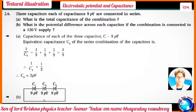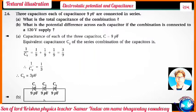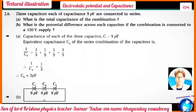Three capacitors each of capacitance 9 picofarads are connected in series. What is the total capacitance of the combination? And what is the potential difference across each capacitor if the combination is connected to a 120 volt supply? Part A: Equivalent capacitance in series: 1/Cs = 1/9 + 1/9 + 1/9 = 3/9 = 1/3, therefore Cs = 3 picofarads.